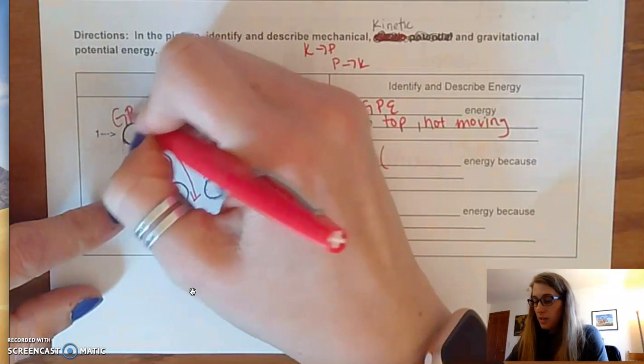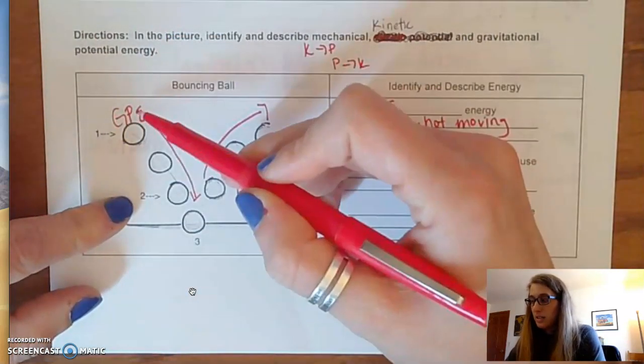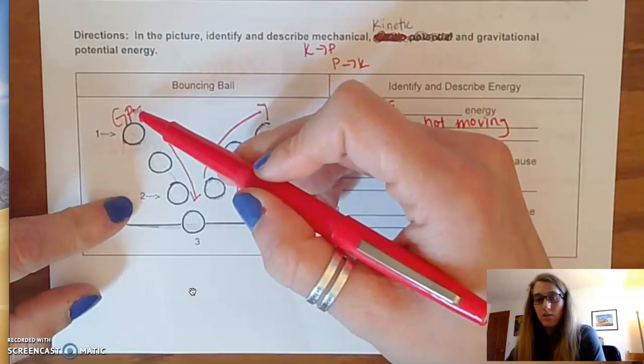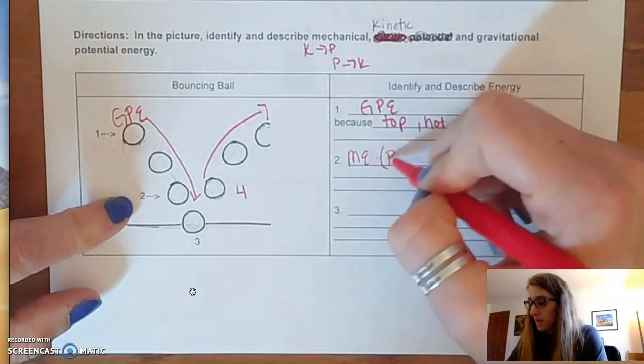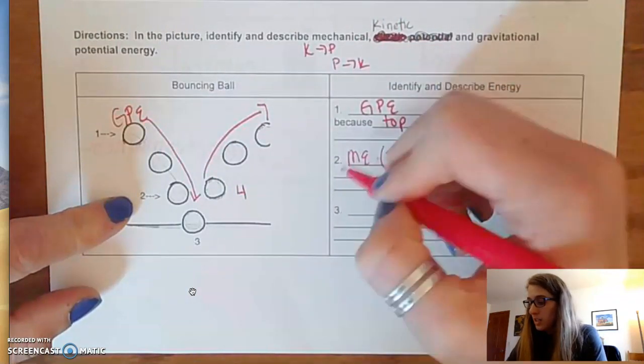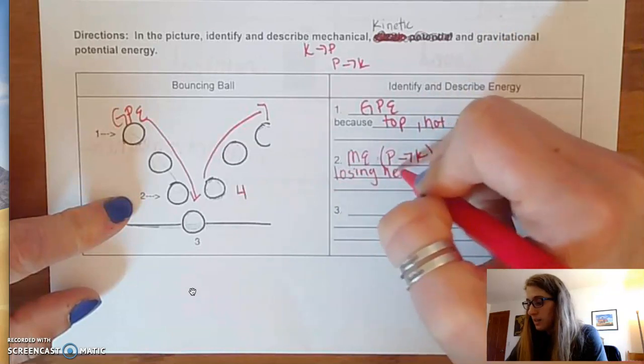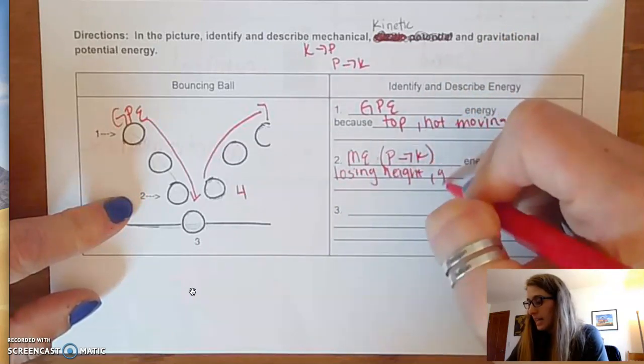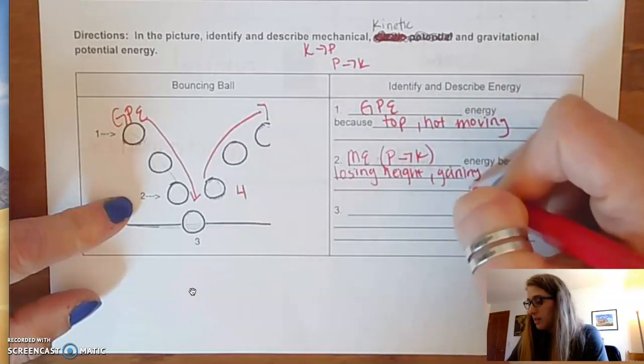If I know that this one is gravitational potential, I know that it starts at gravitational potential. So this one must be P to K. I know this because it is losing height and gaining speed.